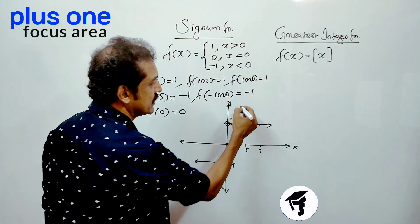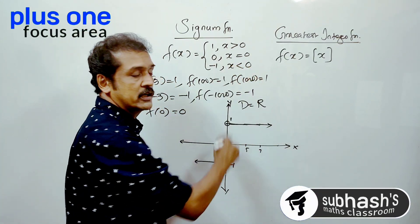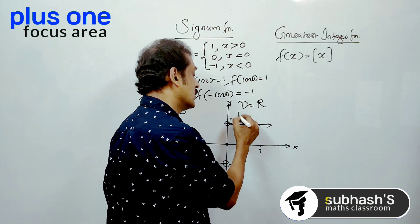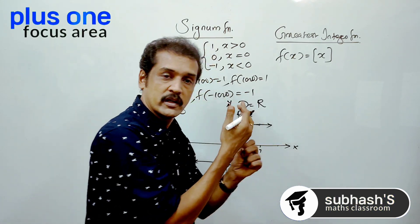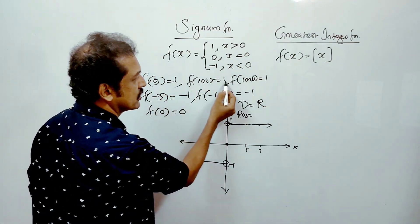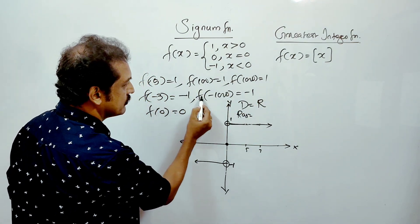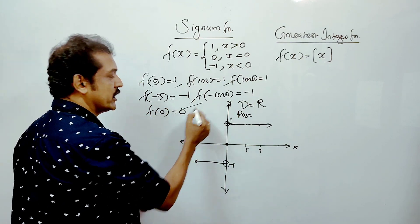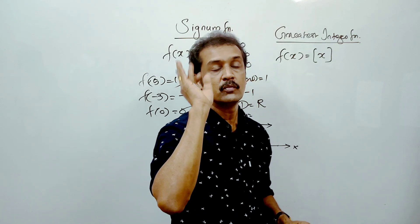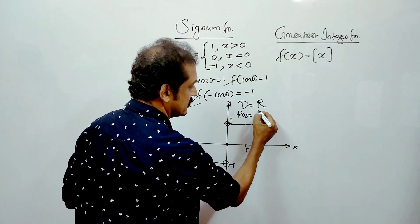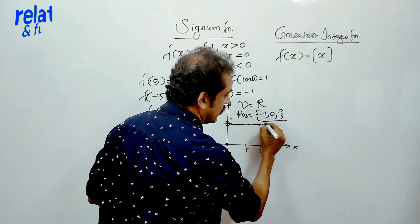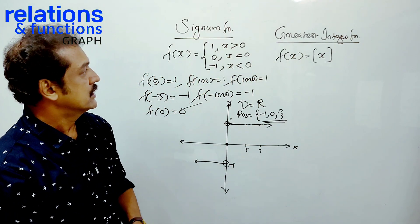Domain is the set of all real numbers. Range is the same — the answer can be 0, 1, or minus 1. Therefore range is equal to {minus 1, 0, 1}. Domain is capital R, range is {minus 1, 0, 1}. We have a very important function — the name is the signum function.